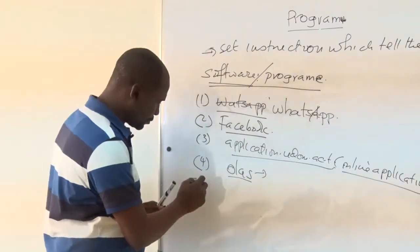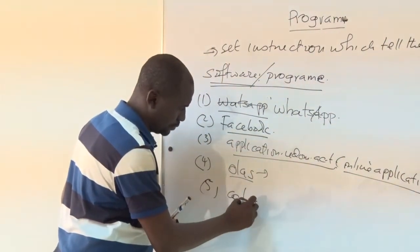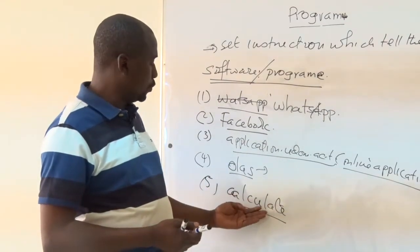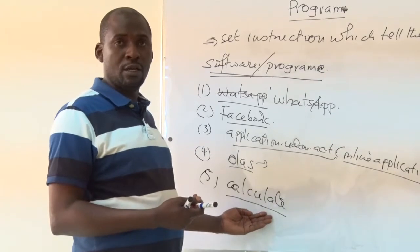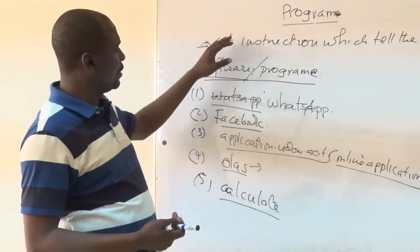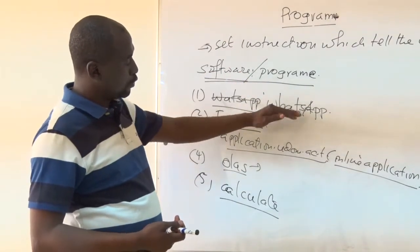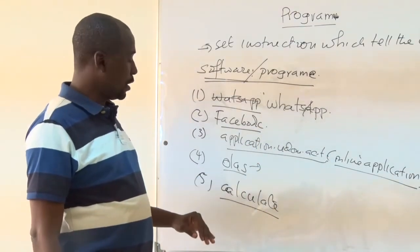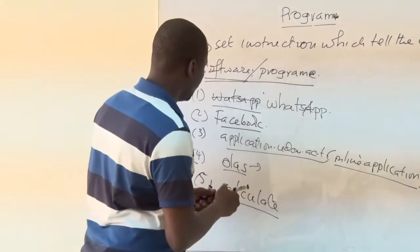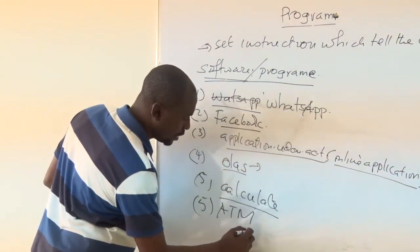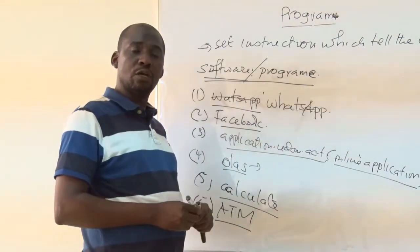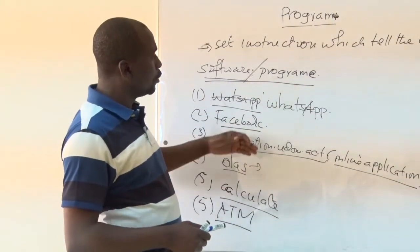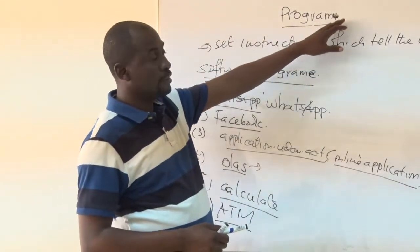Take the example of a calculator — a calculator is also a program. You may write or create a program that works as a calculator and have your own calculator. Even the ATM machine has a program inside it which allows you to withdraw your cash from the bank. So all of these are what we call programs, and this is all about this course: computer programming.